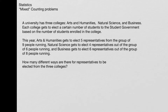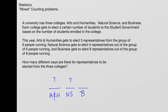There are three colleges, so there are really three parts to this. There's the election for arts and humanities, there's the election for natural science, and there's the election for business. The question is how many ways are there for people to be elected from arts and humanities, how many ways for natural science, and how many ways for business.